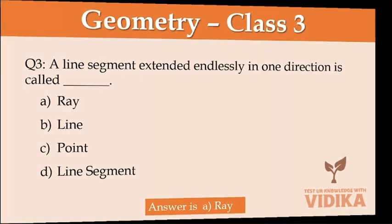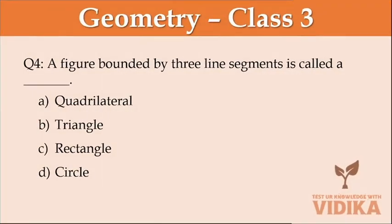A figure bounded by three line segments is called a dash. Option A quadrilateral, option B triangle, option C rectangle, option D circle.